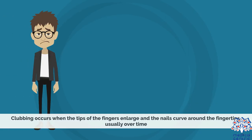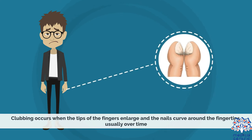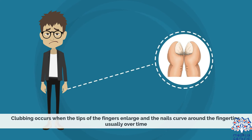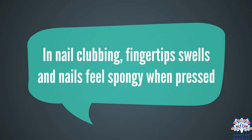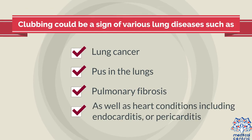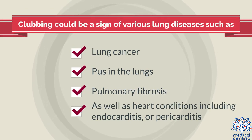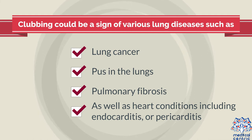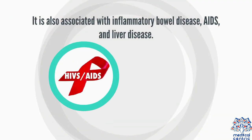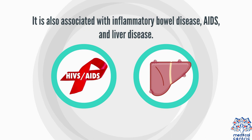Clubbing occurs when the tips of the fingers enlarge and the nails curve around the fingertips, usually over time. In nail clubbing, fingertips swell and nails feel spongy when pressed. Clubbing could be a sign of various lung diseases, such as lung cancer, pus in the lungs, or pulmonary fibrosis, as well as heart conditions including endocarditis or pericarditis. It is also associated with inflammatory bowel disease, AIDS, and liver disease.